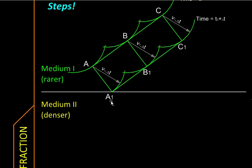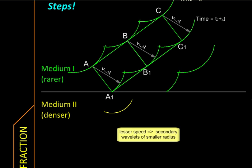Now interestingly, when A1, B1, and C1 become the secondary emitters, the secondary wavelets from A1 will spread in medium 2 while those from B1 and C1 will spread in medium 1. Now remember, the speed of light is not the same in the two media. It is less here.